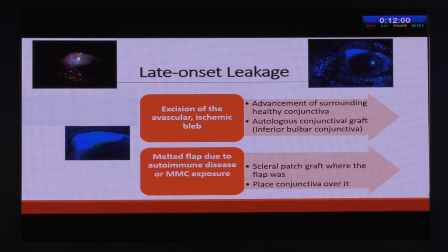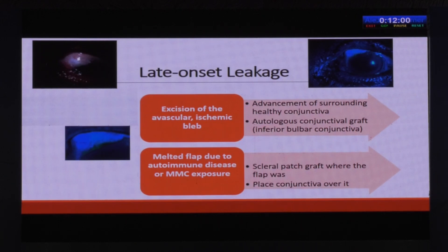The other cause for late hypotony is late-onset leakage, mainly because of an avascular ischemic bleb due to high concentration mitomycin use. The patient complains of watering. You perform a Seidel's test to check for a leak. To treat it, you excise the bleb — but importantly, you do not have to excise the entire bleb. You can just remove part of the bleb epithelium and advance healthy conjunctiva to suture it. If you don't have enough conjunctiva, a pedicle flap, medial conjunctival flap, autologous graft, or amniotic membrane can be used.